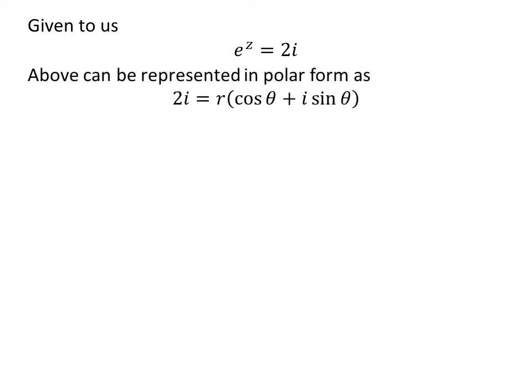The complex number 2 times iota can be represented in polar form as R times cosine of theta plus iota times sine of theta. Here, R is equal to the modulus of 2 times iota, R times cosine of theta is equal to 0, and R times sine of theta is equal to 2.